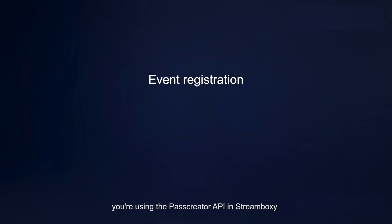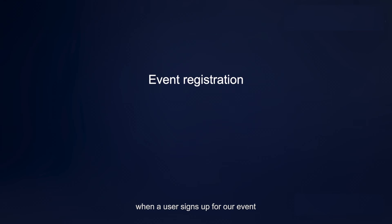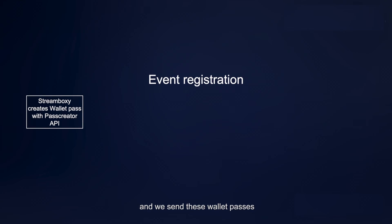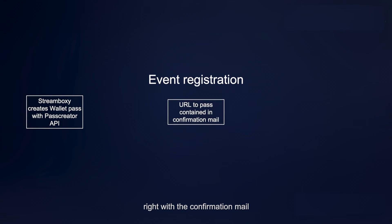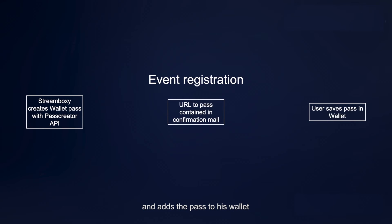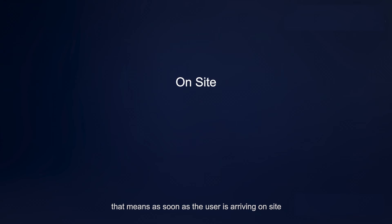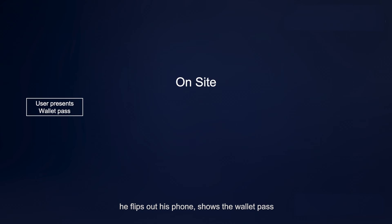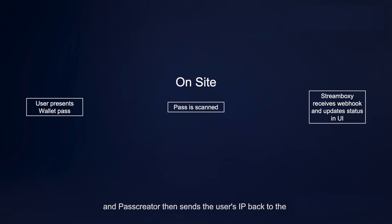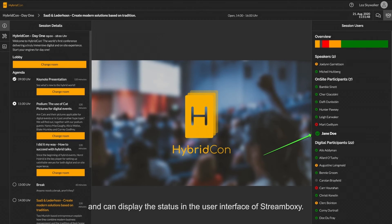Johannes, you are using the PassCreator API in StreamBoxy to create the on-site check-in for users. When a user signs up for our event, we use the PassCreator API to create a Wallet Pass and send it with the confirmation email to our participant. The participant opens the mail, clicks on the link, and adds the pass to his wallet. From there, he is ready for the event and presents the Wallet Pass to the companion app. As soon as the user arrives on-site, he shows the Wallet Pass which is scanned using the PassCreator companion app, and PassCreator sends the user's ID back to the StreamBoxy API — so StreamBoxy knows which user has arrived on-site and can display the status in the user interface.